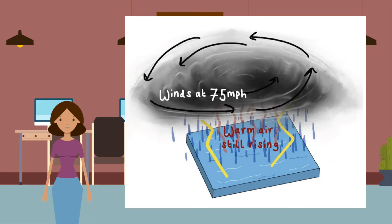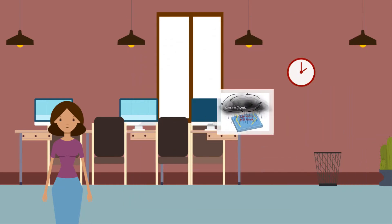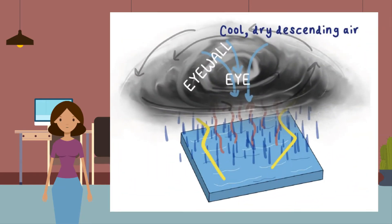Step four — the constant addition of energy from the warm air causes the storm to spin faster and generate higher wind speeds. At 75 miles per hour, the storm can be classed as a category one tropical cyclone. Step five — the storm develops an eye in the center, an area of extremely low pressure where cool dry air descends. The weather within the eye is relatively calm and cloud-free.